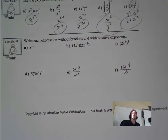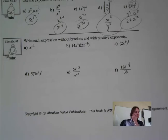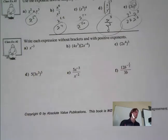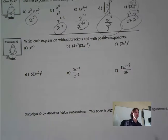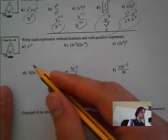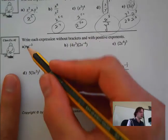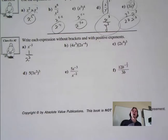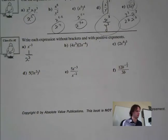Next question: express these without brackets and with positive exponents. The first one has a negative exponent — we use the integral exponent law and flip it, giving 1 over x to the 3.